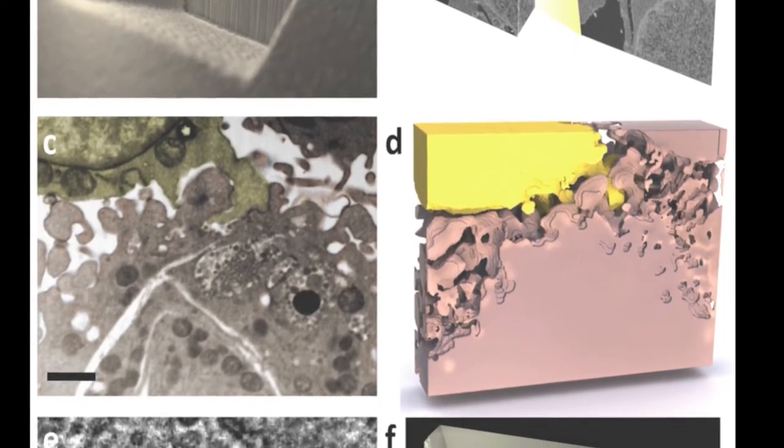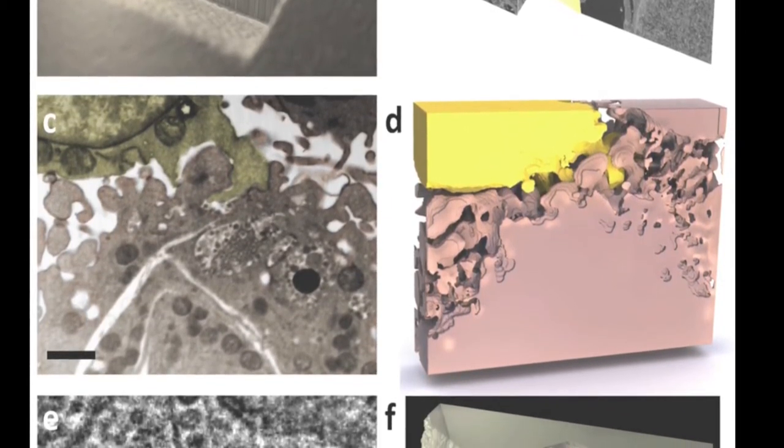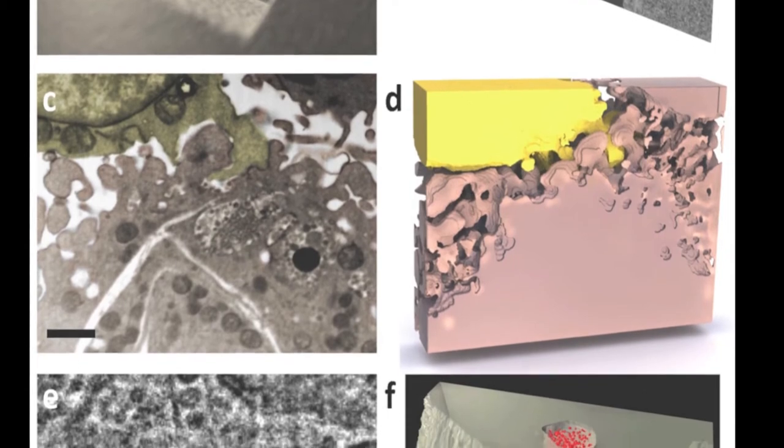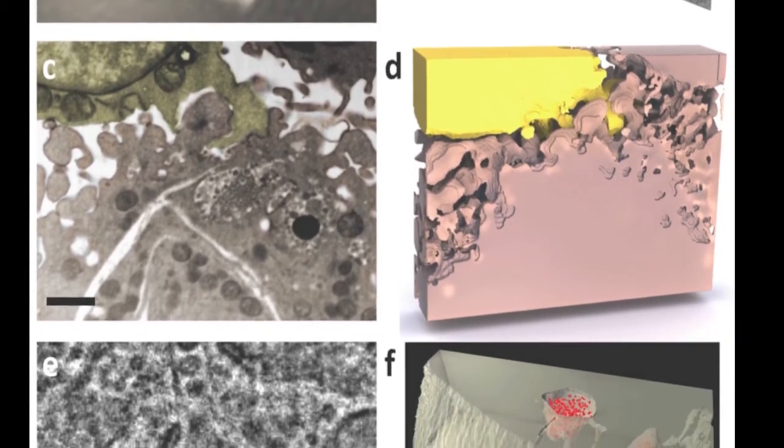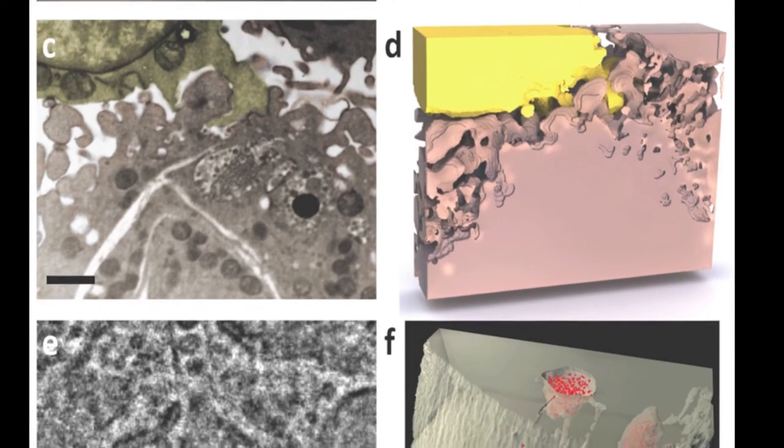Each slice is serially imaged using scanning electron microscopy as the FIB ablates the cell layer by layer, and the SEM images are used to generate a 3D map of the cell.